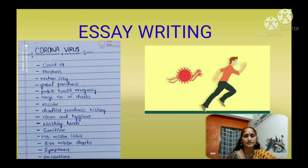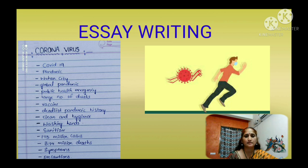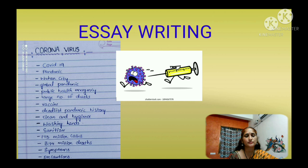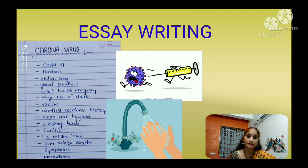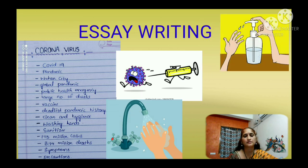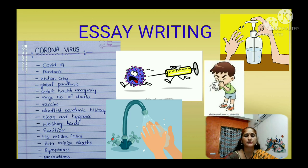COVID-19 pandemic. Wuhan city. Global pandemic. Public health emergency. Large number of deaths. Vaccine. Deadliest pandemic in history. Clean and hygiene — washing hands. Sanitizer. 173 million cases. 3.74 million deaths. Symptoms. Precautions.